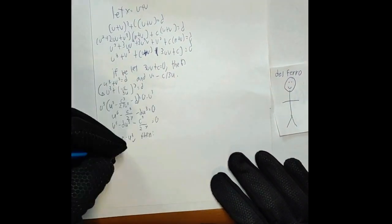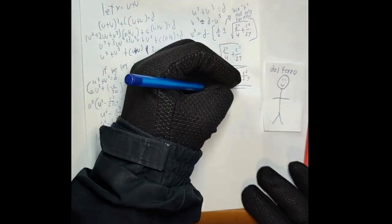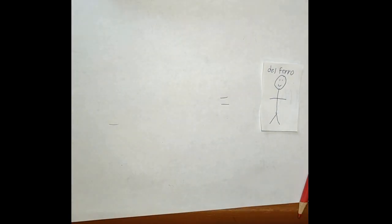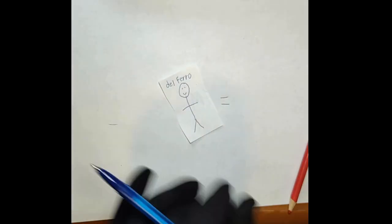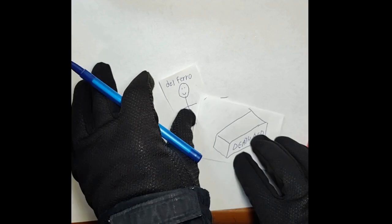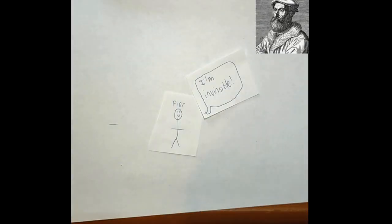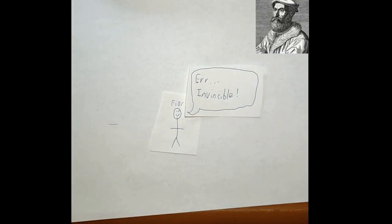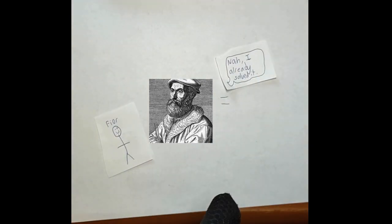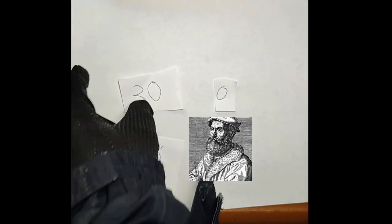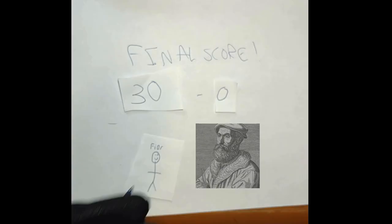In 1510, Scipione del Ferro found a method to reliably solve depressed cubics. He kept his method a secret, only revealing it to his student, Antonio Fior, on his deathbed in 1526. After del Ferro's death, Fior, thinking he was invincible, challenged Niccolò Fontana Tartaglia, who independently solved the problem just before the competition. He then dominated Fior in the duel, 30 to nothing.